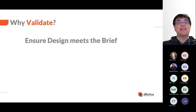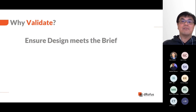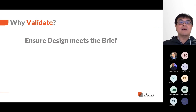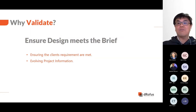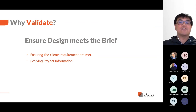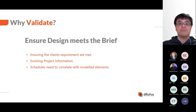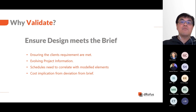A single reason for data validation is to ensure design meets the brief. There are different scenarios on a project where it is important to do these validations. Firstly, it is to ensure that the client requirements are met. Through different project stages, the information and data is constantly evolving. Briefing information can also change during the course of design, hence it is important to check and track what the brief has asked for and if the design is meeting the brief. Different deliverables should also be aligned showing the same information. Lastly, keeping to project budget is an important aspect, and deviations from brief can affect the cost of projects.